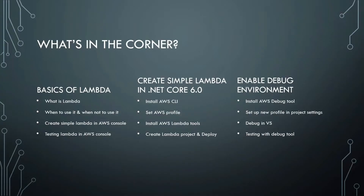In this video we will learn what Lambda is, when to use it, when not to use it, how to create a simple Lambda in the AWS console and test it. Then we move to create a sample Lambda project using Visual Studio 2022 and .NET Core 6. We will see prerequisites and create a solution, then deploy it in AWS programmatically and test it.